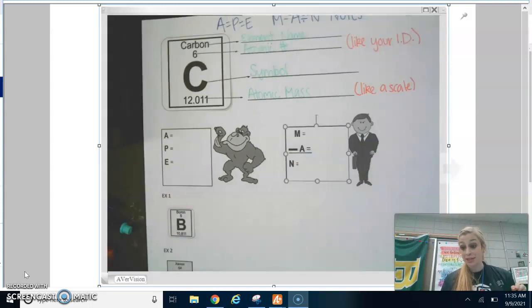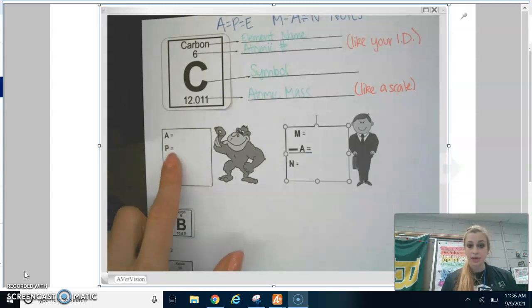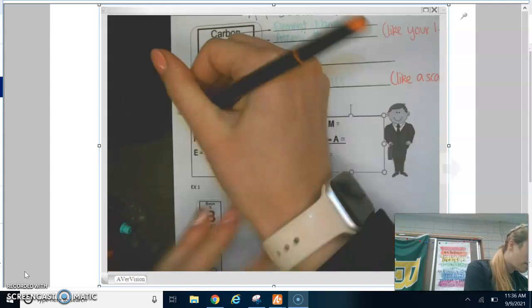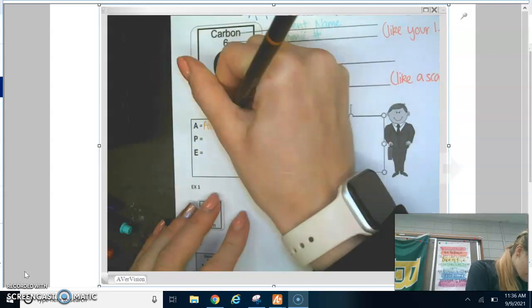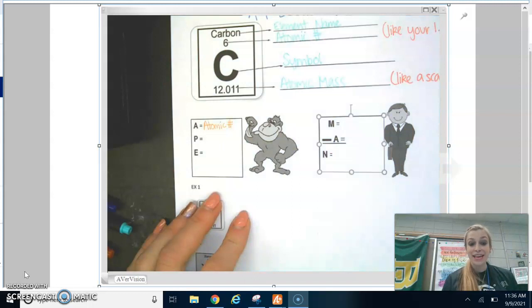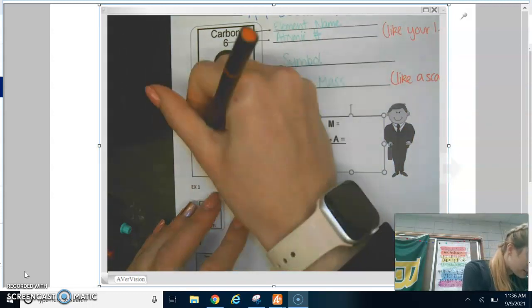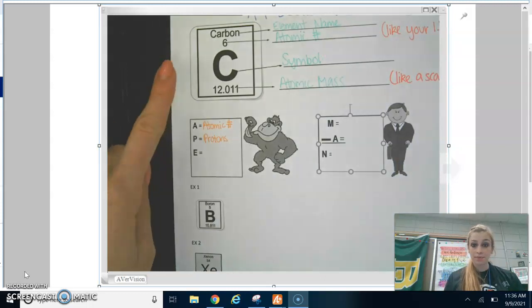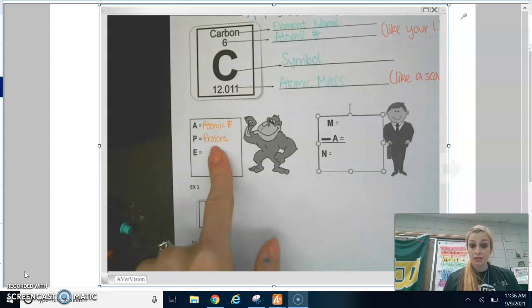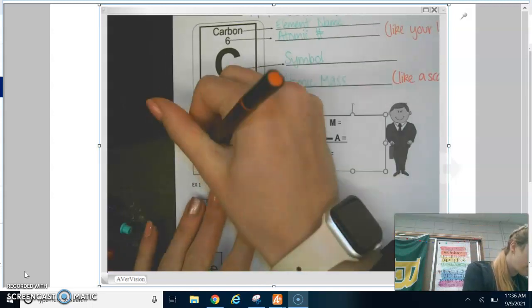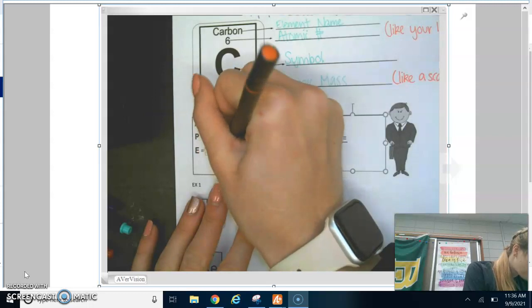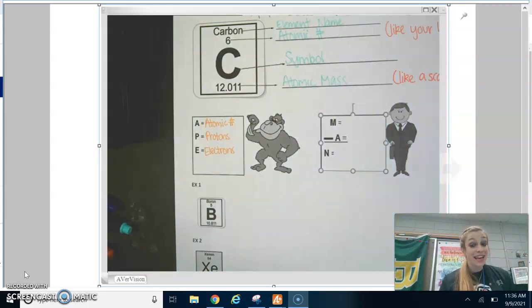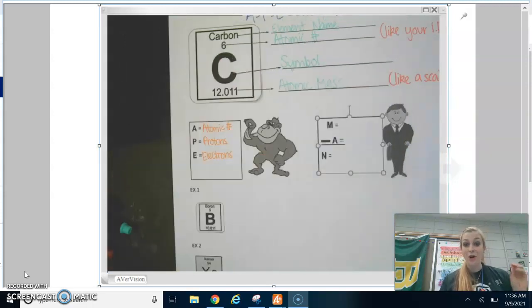These are the easiest formulas in the whole world. Look at Ape. It has an equal sign, an equal sign, an equal sign. So A stands for atomic number. Whatever your atomic number is, is equal to the number of protons. So let's pause. What is carbon's atomic number? It's six. So how many protons does carbon have? Six. They're equal. This is also equal to the number of electrons. So how many electrons does carbon have? Six. All three of those are equal. Atomic number is equal to protons and electrons. I told you this was easy.